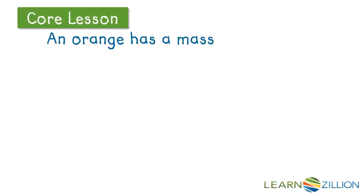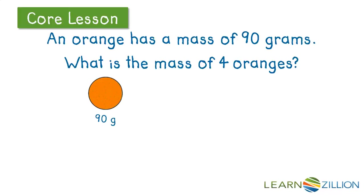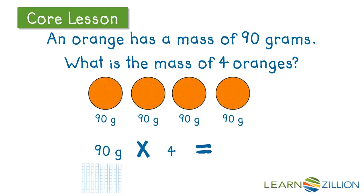So let's look at another word problem to try to practice. An orange has a mass of 90 grams. What is the mass of four oranges? So I'm going to draw a picture here. Here's my orange that has a mass of 90 grams, but I don't have just one — I actually have four of them. So I know that I have 90 grams times four oranges equals what?